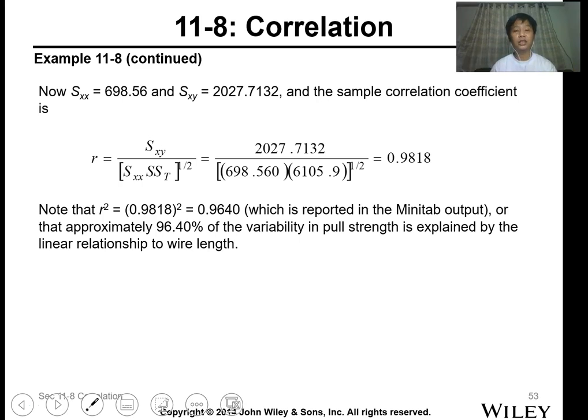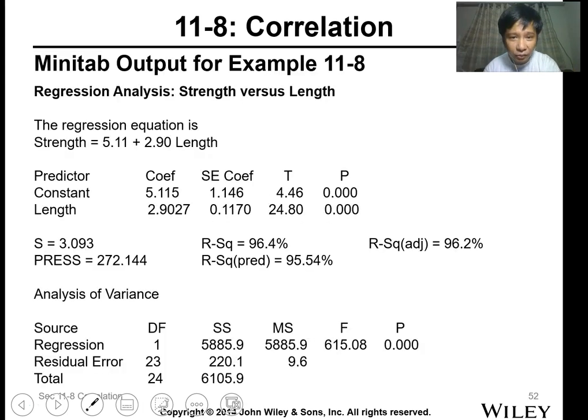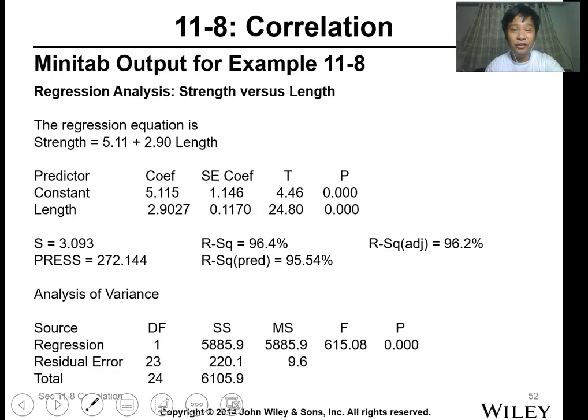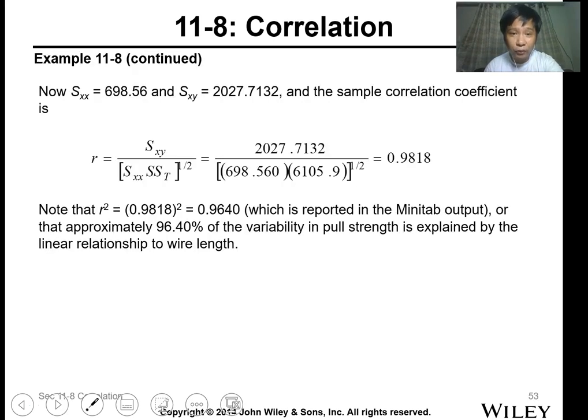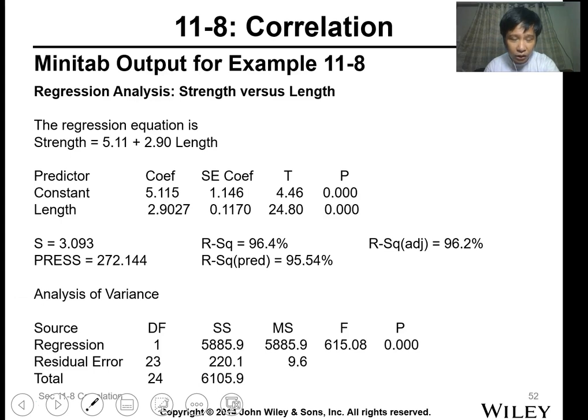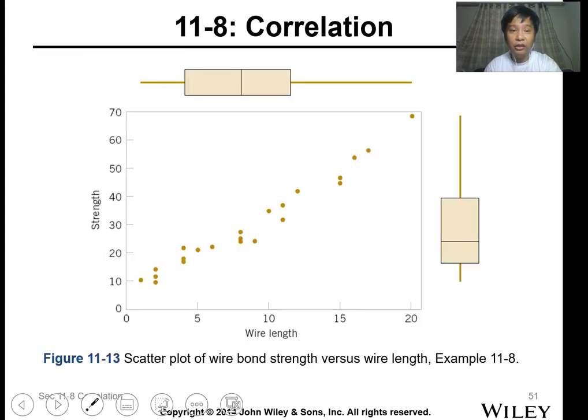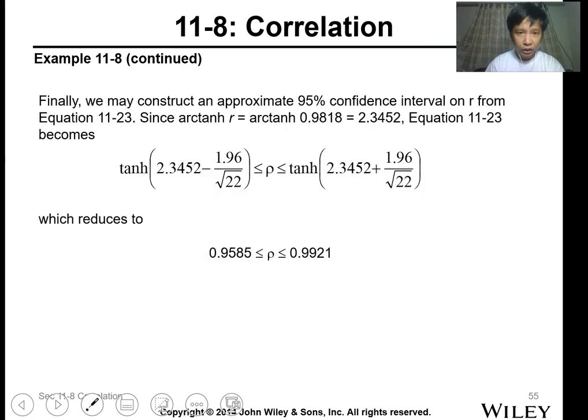Getting the regression correlation, basically, you just get the square root. So that's 96.4, getting the square root, 0.981. Or you can use the formula, SXY, that's from the data. You can compute it from the data.